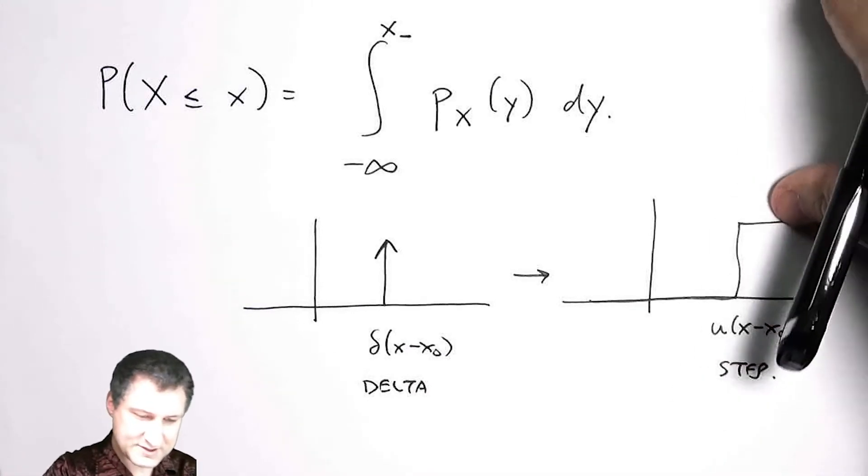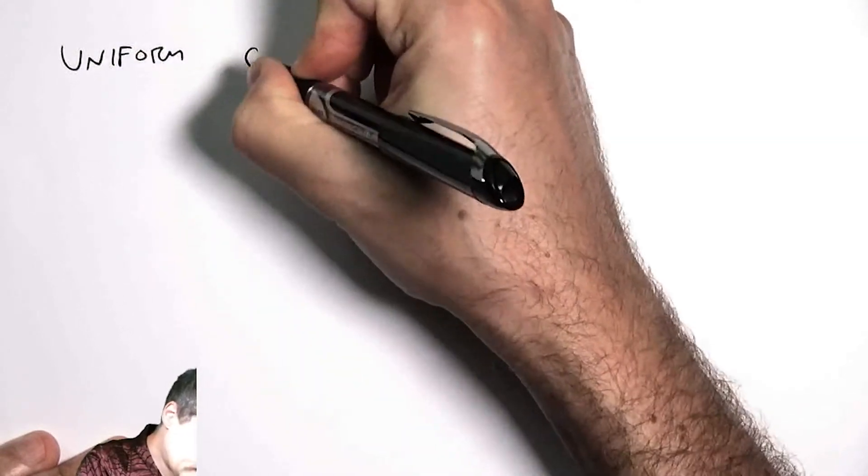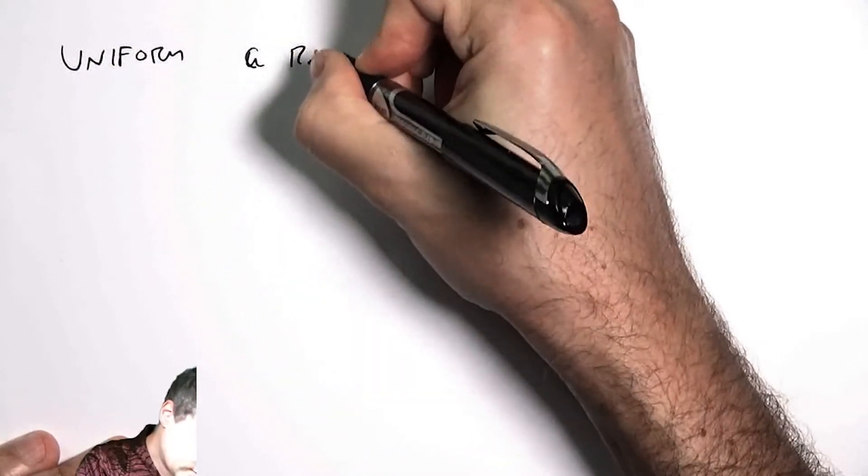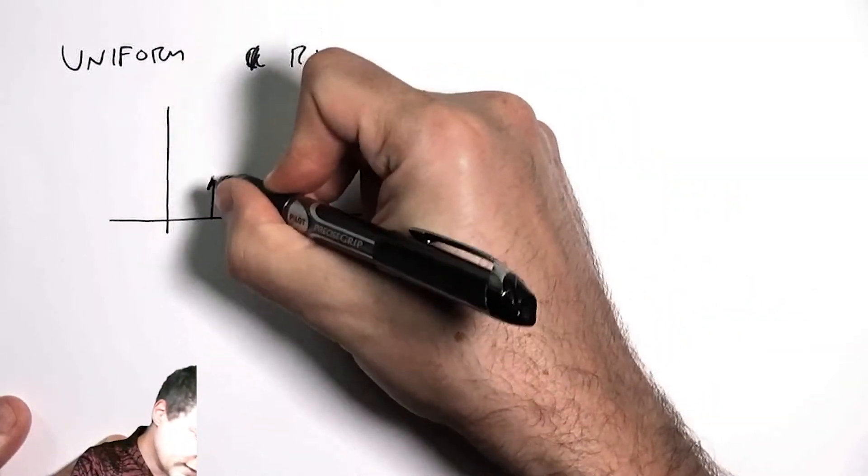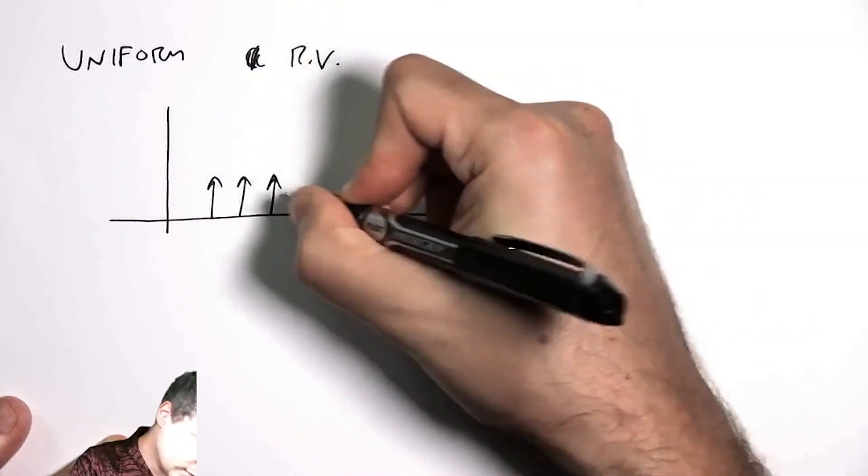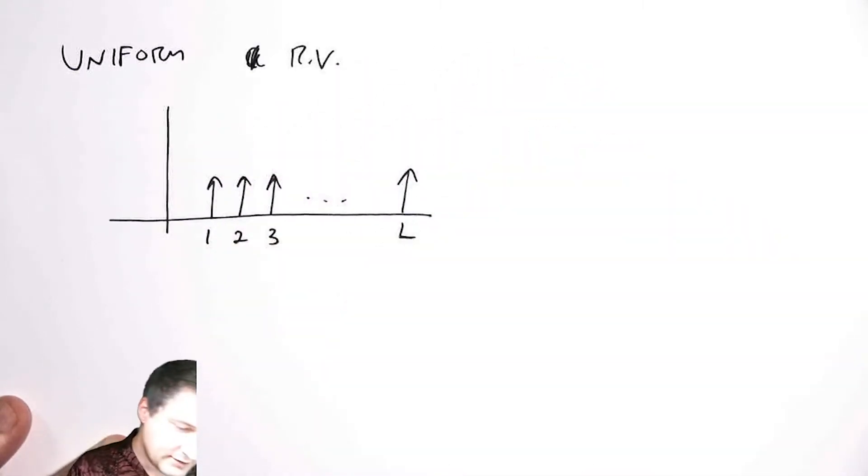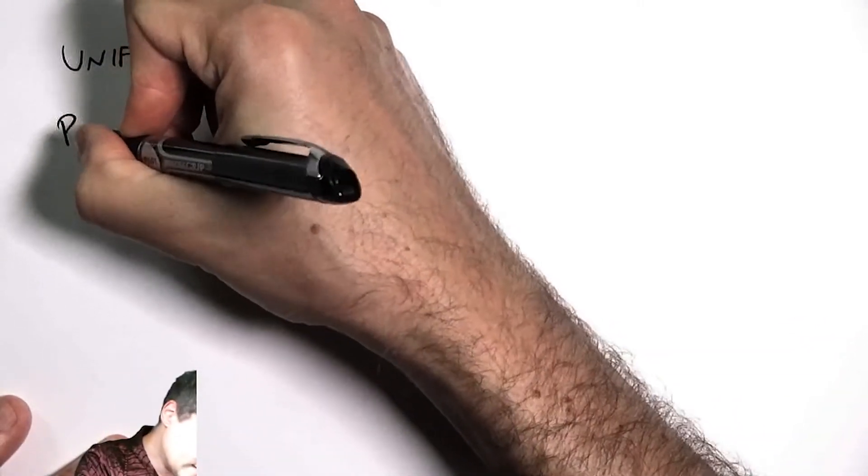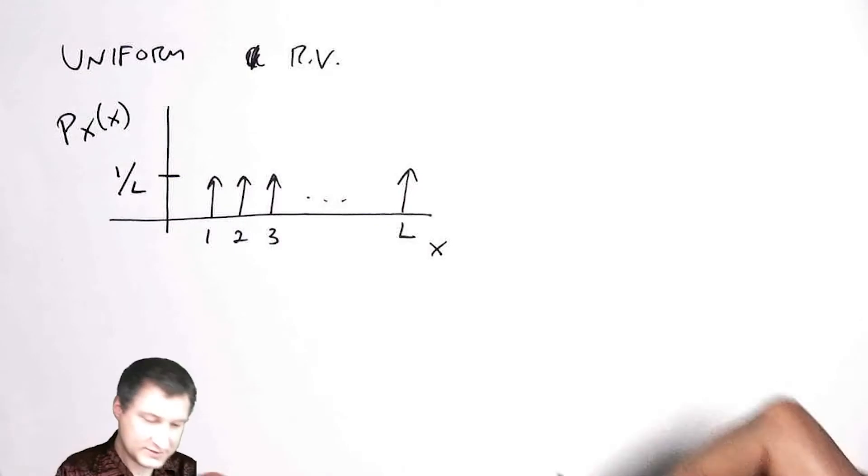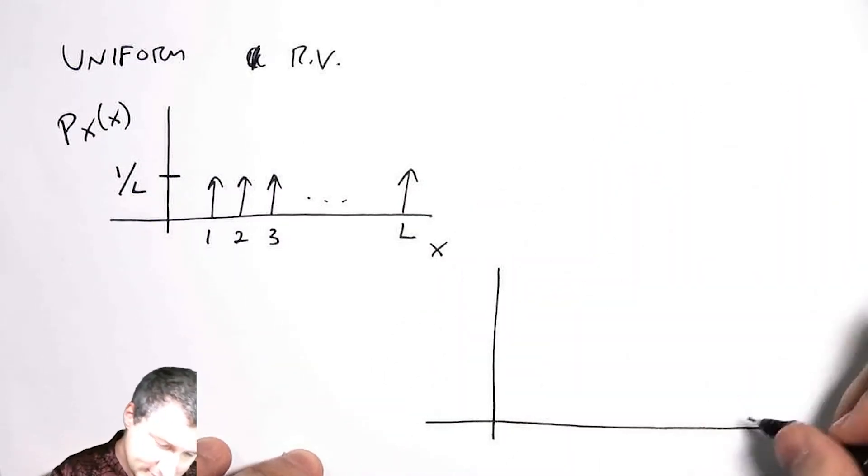For example, the uniform random variable. So what does the CDF for that look like? Let's suppose that I have L possible outcomes. That means the probability of each of these guys is one over L. This is my PMF.